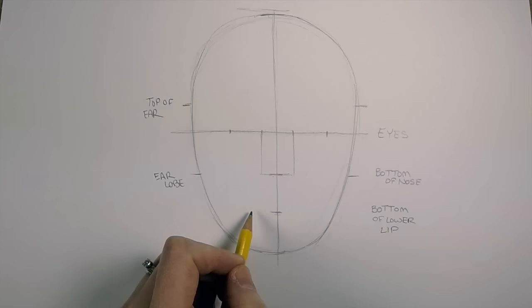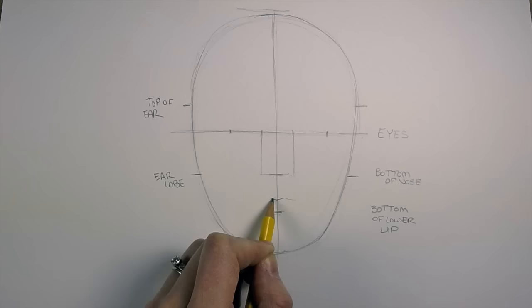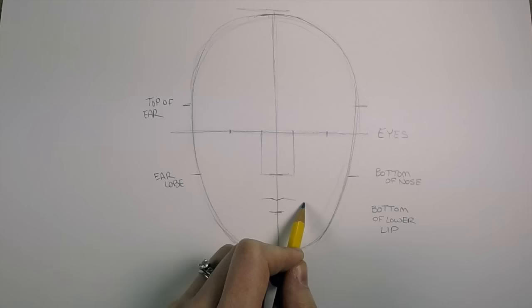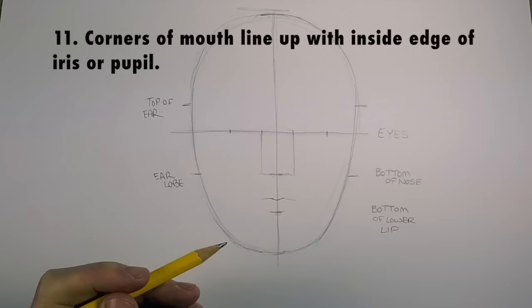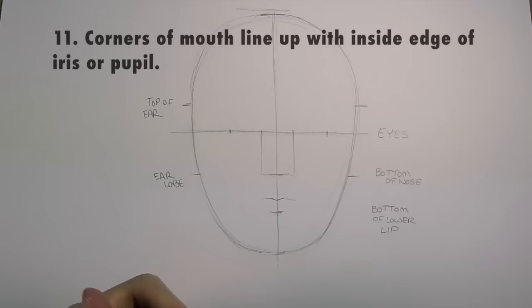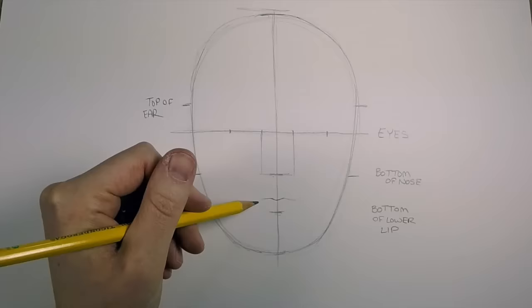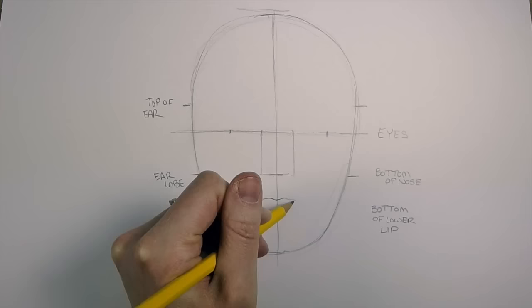Now let's talk about the mouth. Remember, this is the bottom of the lower lip, so the actual center of the lips would be up just a little bit higher. We want to figure out where our mouth ends, where the corners of the mouth are. If you were to hold your pencil up from the corner of your mouth and measure, generally it is either on the inside edge of your iris—which would be the colored part of your eye—or it lines up with your pupil.